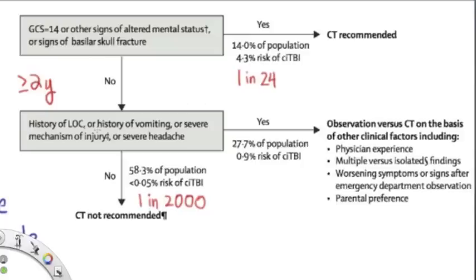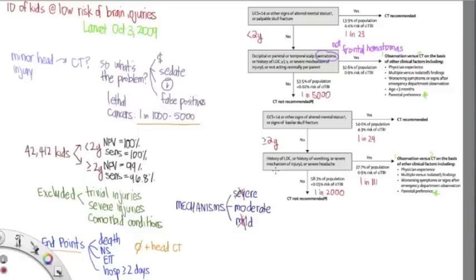Now if they do have some of these features, we go to this side again and we have the same choices again to either observe or to get a CT and we use the same features, physician experience. If they have one of these things, you might observe. If they have lots of these things, you'd probably get the CT. If their symptoms are getting worse, then you're going to get a CT. And again, whatever the parent feels safe with. Look, the risk of a brain injury here is about 0.9%, which is about 1 in 111, which is far greater than our risk of cancer, which we said was 1 in 1,000.